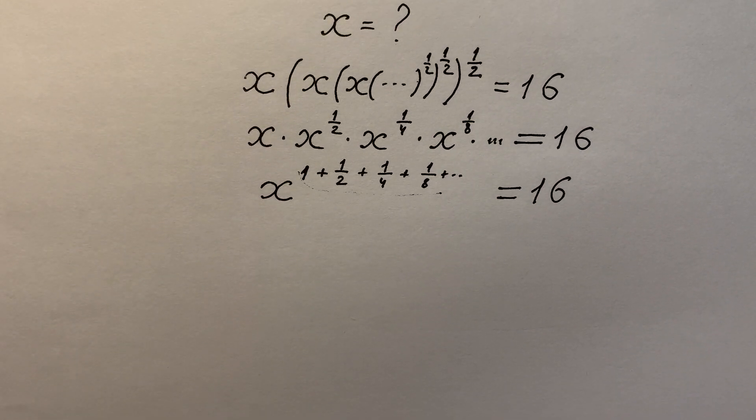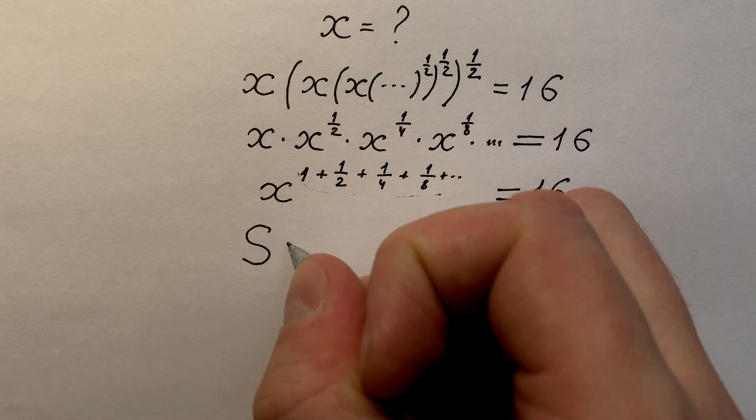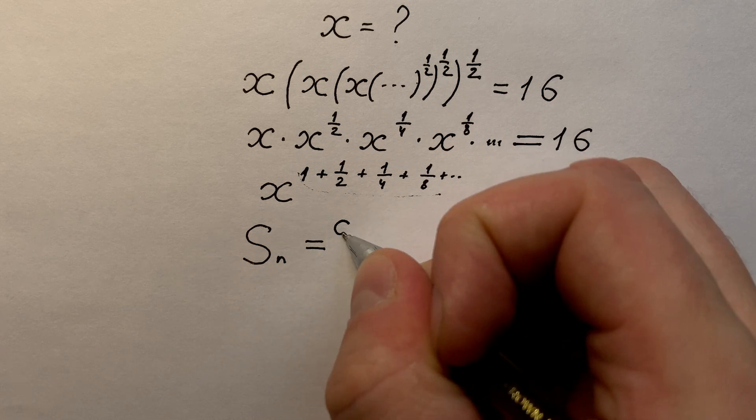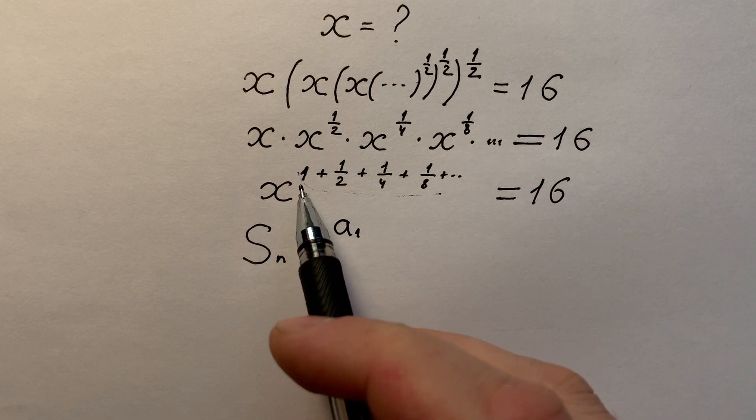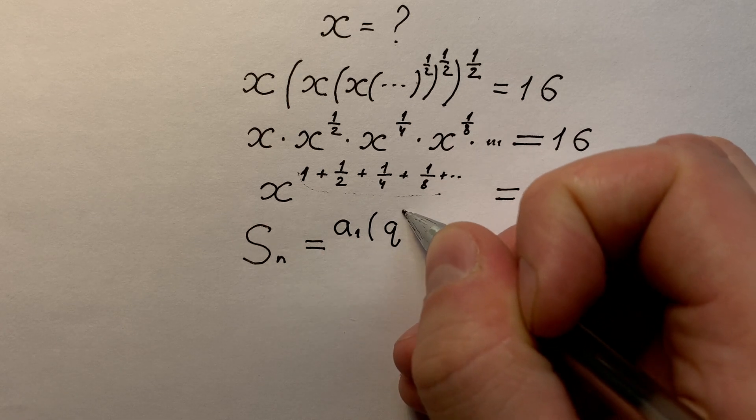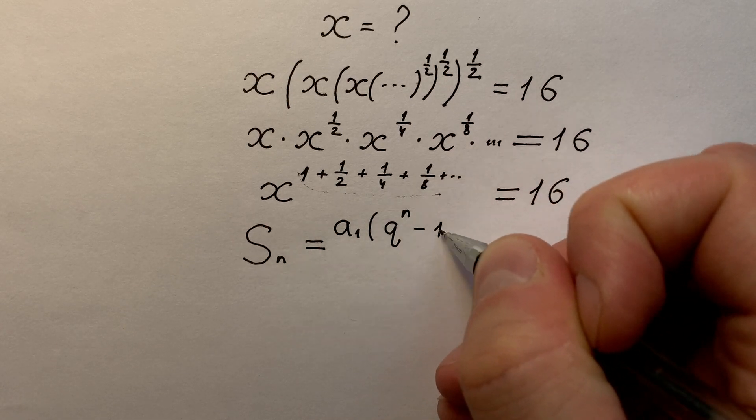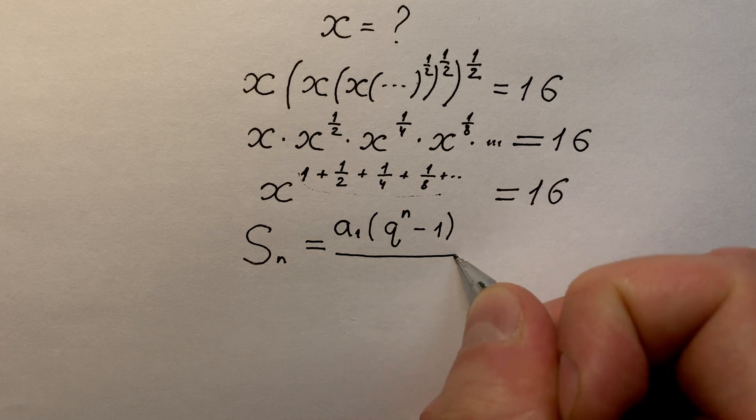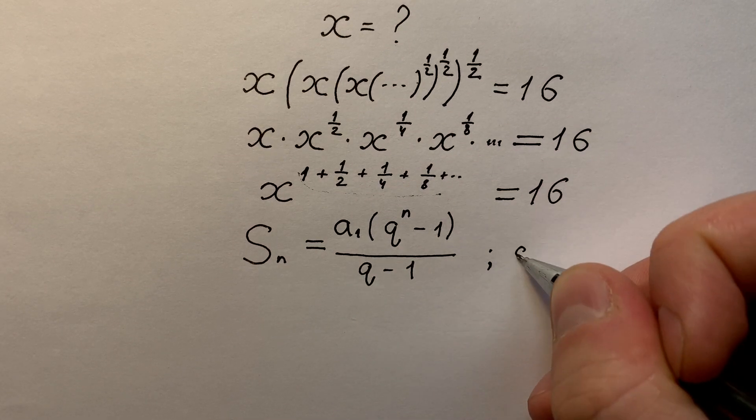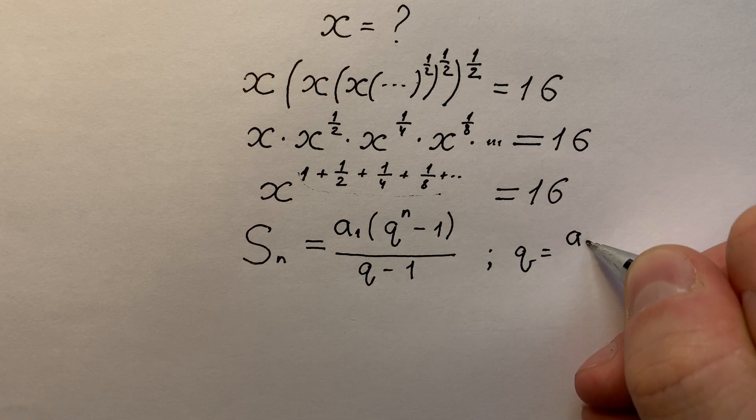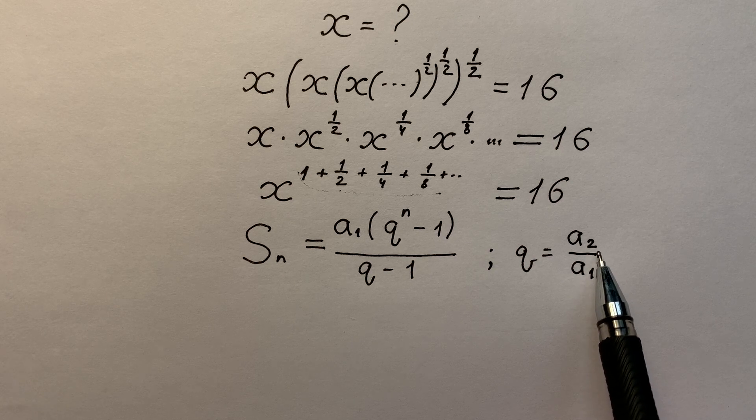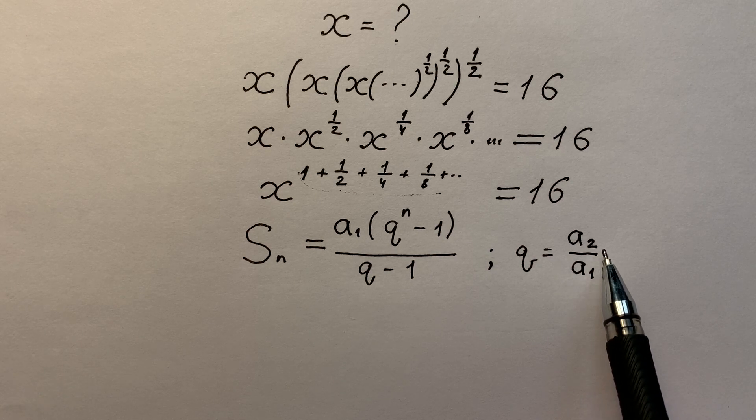Of course we know a formula that sum of this progression which have n members equals to a₁, the first member of progression, times q to the power of n minus 1 divided by q minus 1.